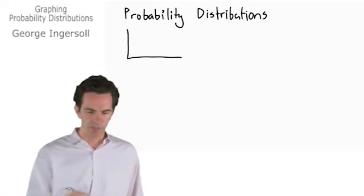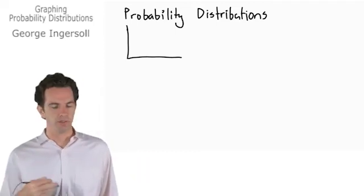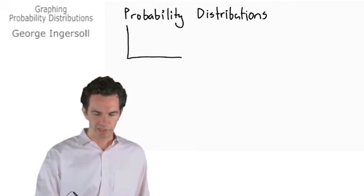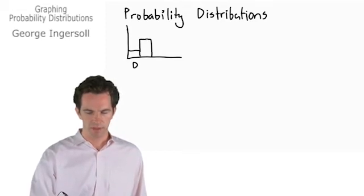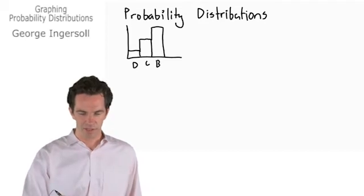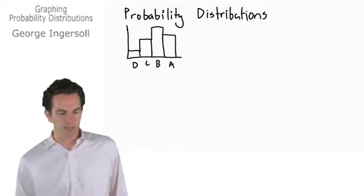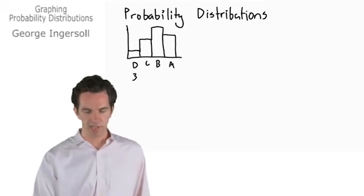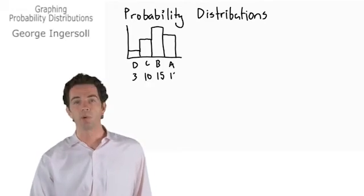Let's say we're looking at a frequency distribution, a histogram showing the grades obtained by a class of students. We have D's here, C's, B's, and A's. A frequency distribution might show there's 3 D's, 10 C's, 15 B's, and 12 A's.